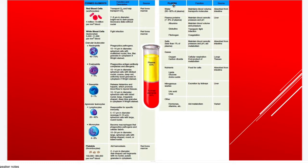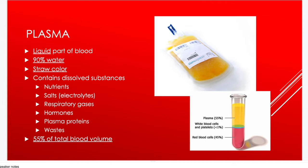Plasma is about 90% water, which we absorb from our intestines to maintain blood volume. It also contains proteins, salts, gases (oxygen and carbon dioxide), nutrients absorbed from the intestines to be carried to all cells of the body, waste products filtered out by the kidneys, and hormones and vitamins carried in the plasma.